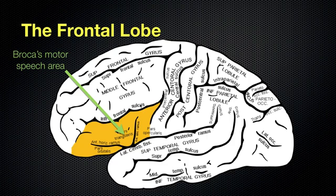If there's damage to this area, the result can be what we call Broca's aphasia. When you have that condition, it causes a form of language impairment where you cannot speak well. It's not that you can't comprehend, but the motor control of speech doesn't function well because the Broca's motor speech area is damaged. I have a short video here to show an example of that.